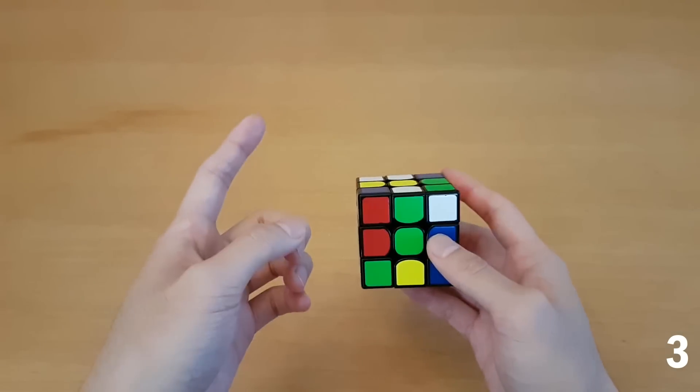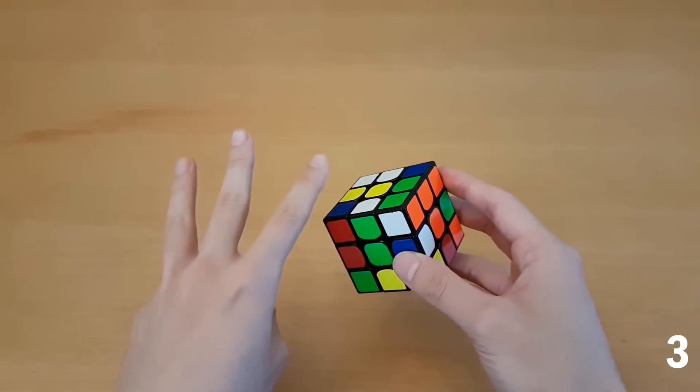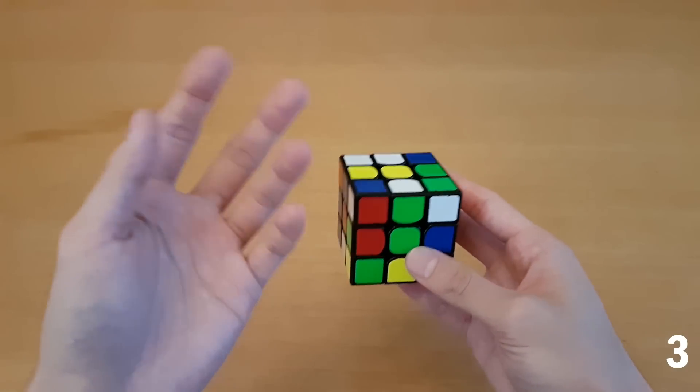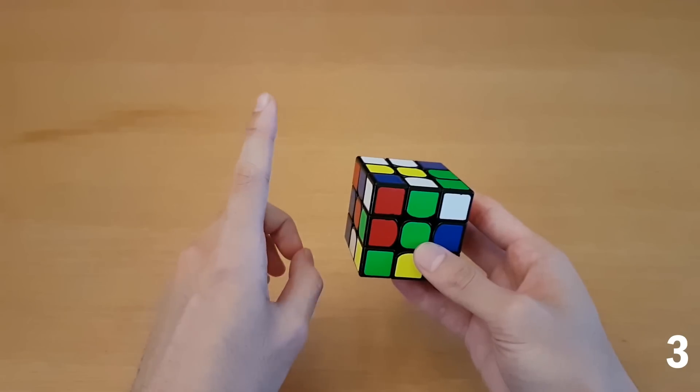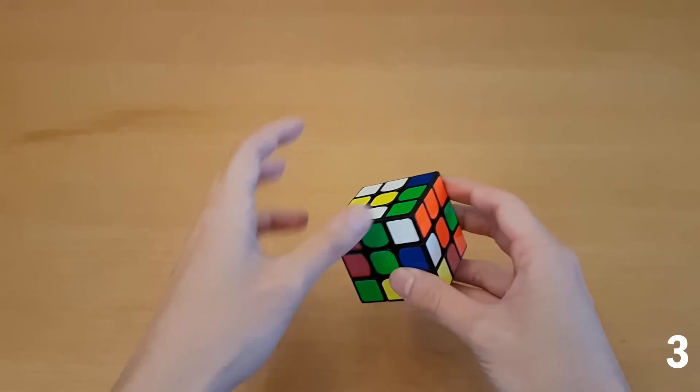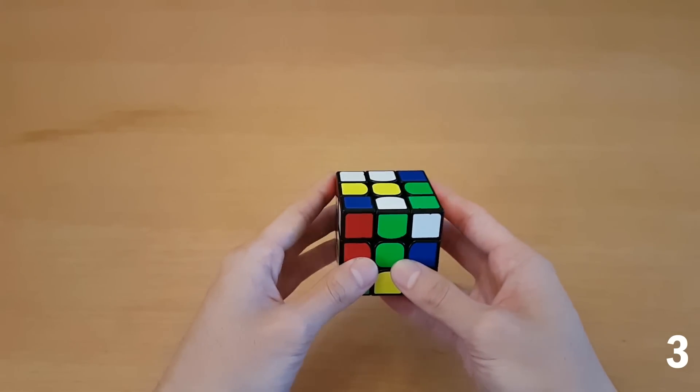And if you save just a little bit of time looking for first pair maybe you can start thinking about the second pair. Or if you're not at that level that extra one move could be the difference between finding three cross pieces versus finding four cross pieces during inspection which can actually save you like a whole second or two. So just saving one move doesn't mean you just save one move, it means you actually get to save a lot of prediction and looking ahead during the beginning of the solve.